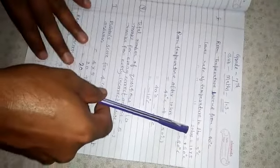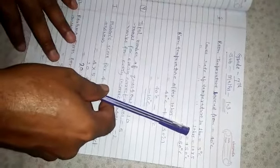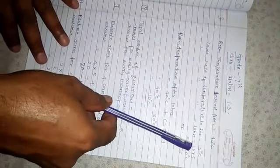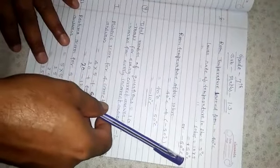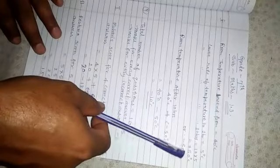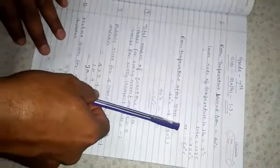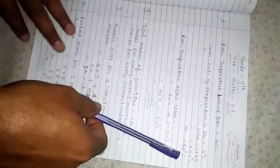So after 10 hours, temperature will decrease 10 into 5, which is 50 degrees Celsius. Actually temperature is decreasing, so we can show minus 50 degrees Celsius.